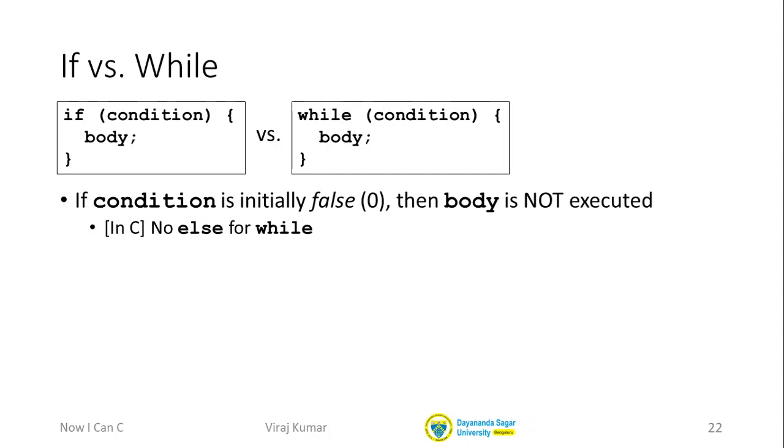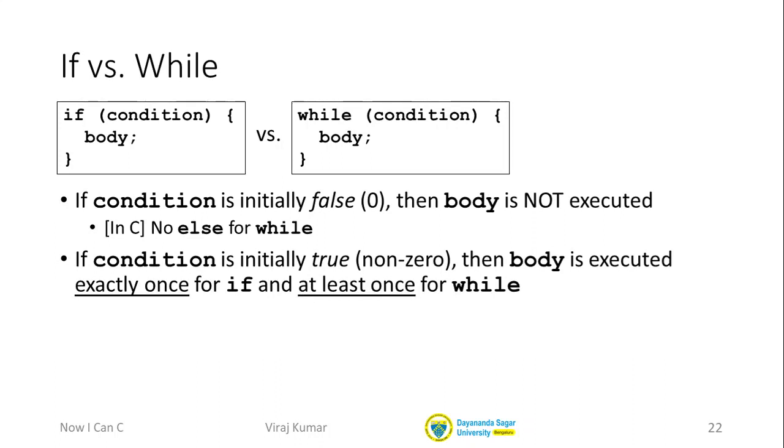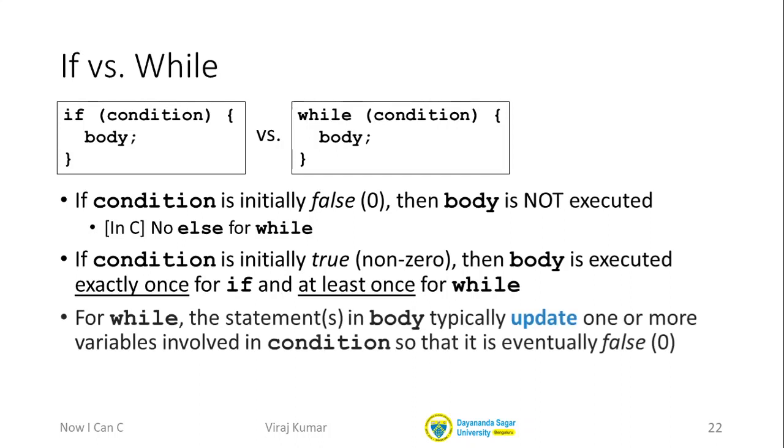But if the condition is true, then the if statement executes the body exactly once. Whereas for the while loop, if the condition is true to begin with, we do the statements in the body and then we loop back up and again test the condition. We keep doing this looping as long as the condition is true. Now typically, inside a while loop, those statements inside the body will modify some variables so that this condition eventually becomes false. If we don't do this, if our body never modifies the variables in the condition, then we will end up with an infinite loop.